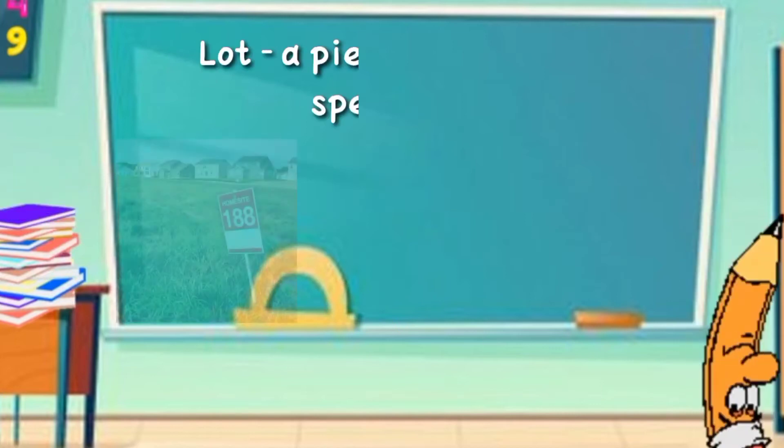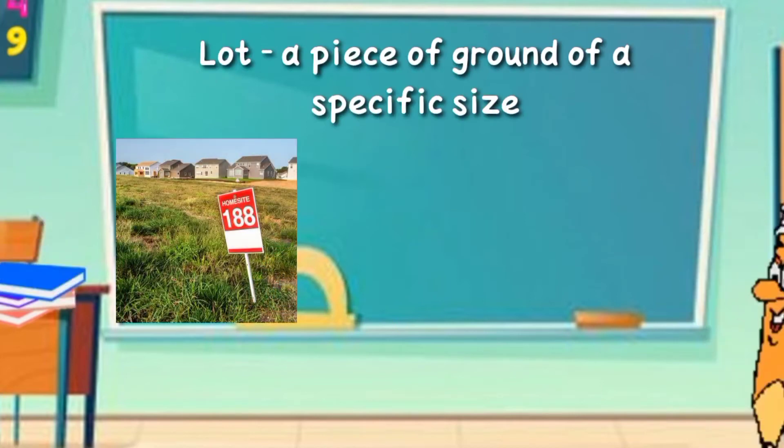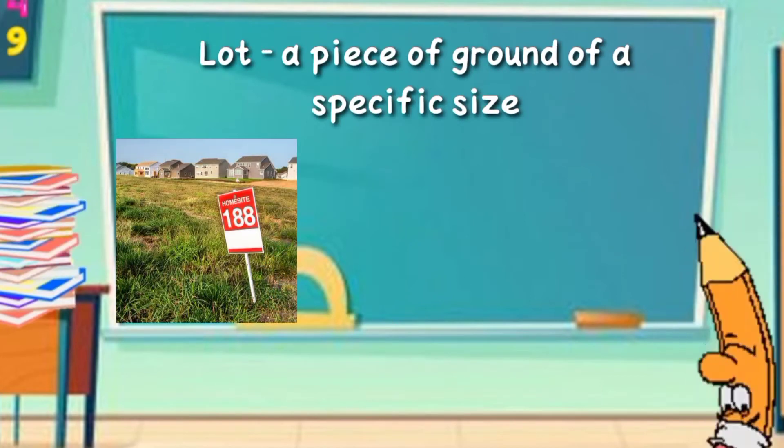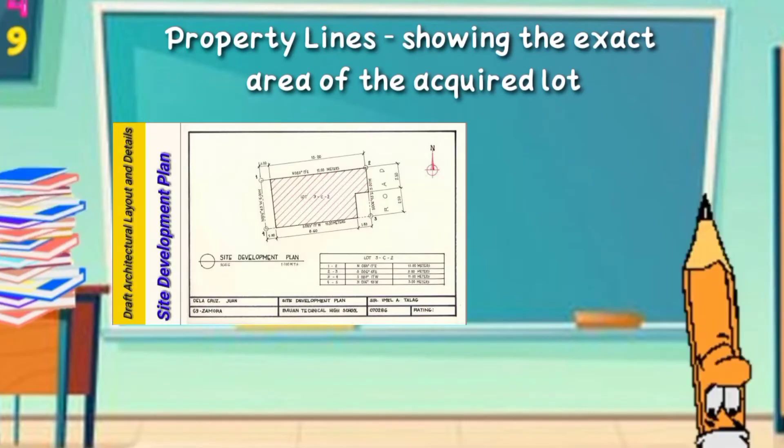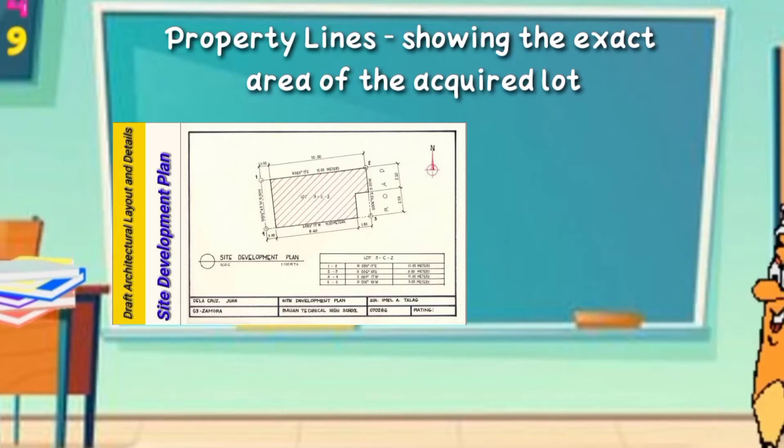Number 2, Lot. Lot is a piece of ground of specific size. Property lines are those lines showing the exact area of the acquired lot.